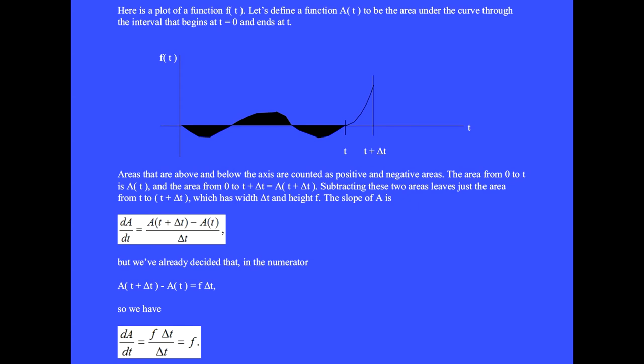But we've already decided that in the numerator, the difference A(t + Δt) - A(t) equals f times Δt. So we have the derivative dA/dt = f·Δt/Δt, which equals f.